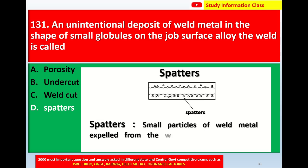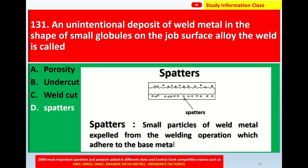Spatters are small particles of weld metal expelled from welding operations which adhere to the base metal surface. For question number 131, the correct answer is option D: spatter.